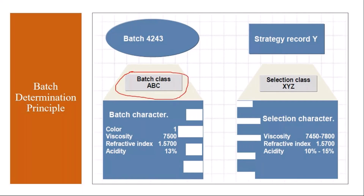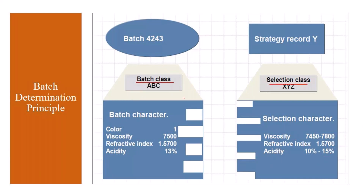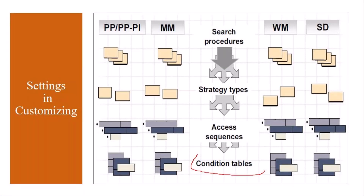You have a batch class with batch characteristics like color, viscosity, and acidity, and there will also be a selection class. The selection class defines on what parameters you want to pick the batches. For example, your batch class may contain four characteristics, but your selection class may use only three — you pick batches based on those three selection characteristics. Sometimes the selection class can be the same as the batch class. To configure batch determination, we first need to do some configuration settings, starting with defining the condition settings.